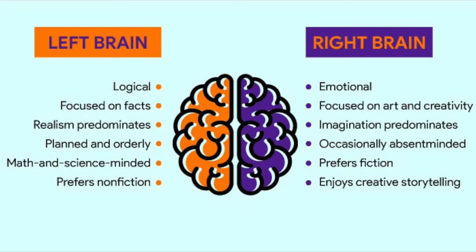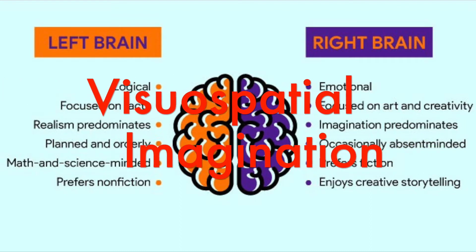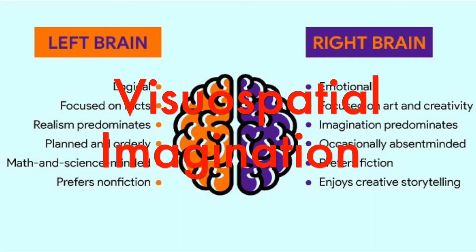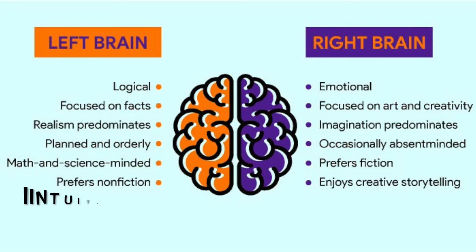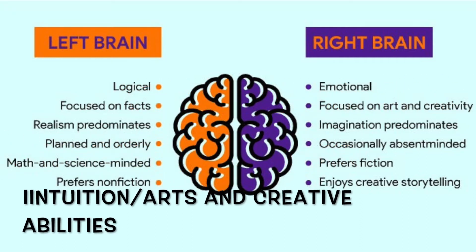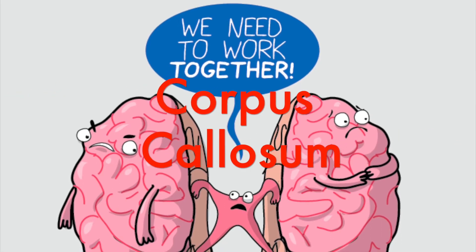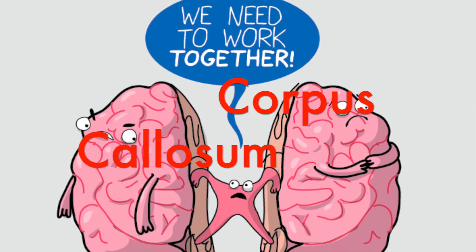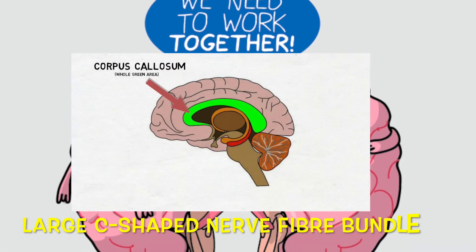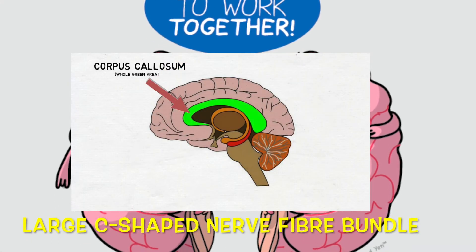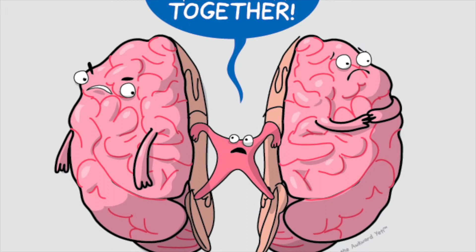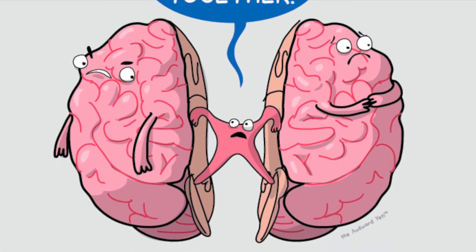As opposed to your right brain, which mostly deals with visual-spatial processing — the capacity to know where you are in space — your imagination, your intuition, and the creative arts. The two hemispheres are connected by a structure called the corpus callosum, a large C-shaped nerve fiber bundle that makes up the largest collection of white matter tissue in the brain.